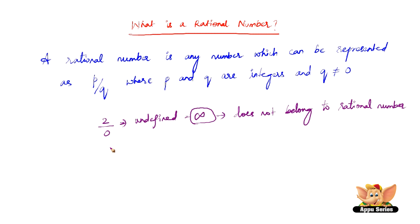But whereas if it is not 0, say for example P is 4 and Q is 2, then this is 2 and this is a rational number.